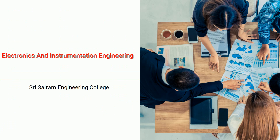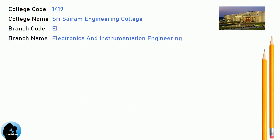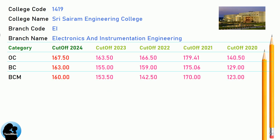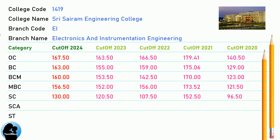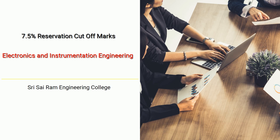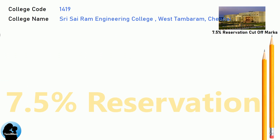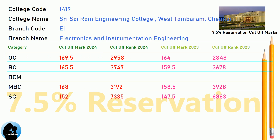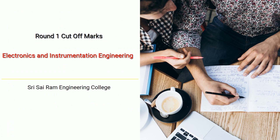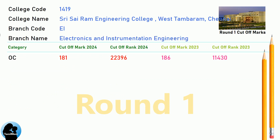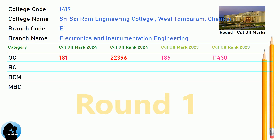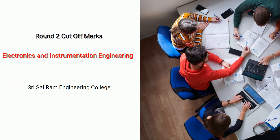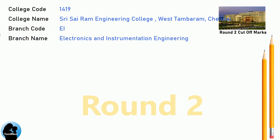DNA Cut-off for Shri Sai Ram Engineering College in Electronics and Instrumentation Engineering. DNA 7.5 Reservation Cut-off for Shri Sai Ram Engineering College in Electronics and Instrumentation Engineering. DNA Round 1 Cut-off for Shri Sai Ram Engineering College in Electronics and Instrumentation Engineering. DNA Round 2 Cut-off for Shri Sai Ram Engineering College in Electronics and Instrumentation Engineering.